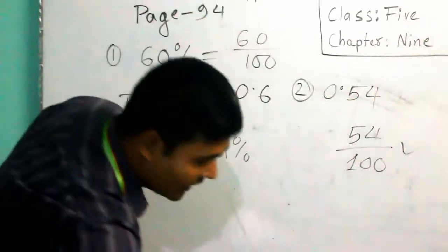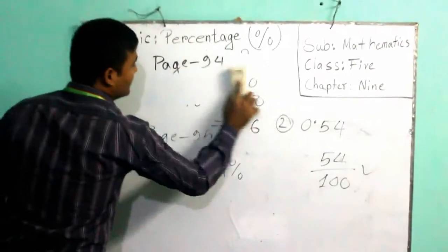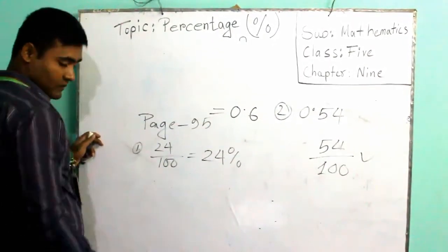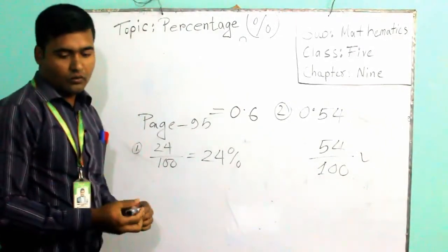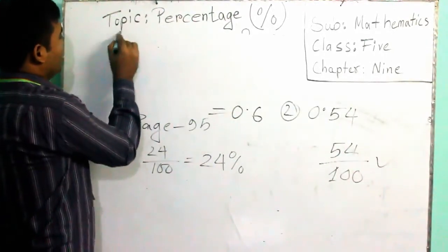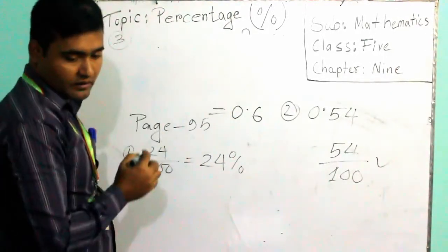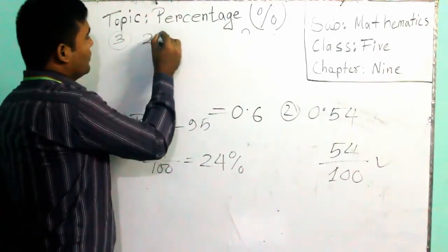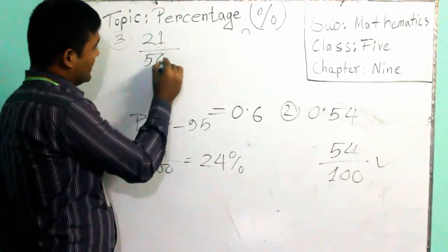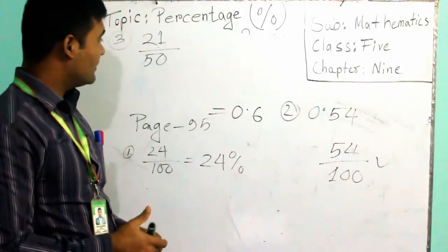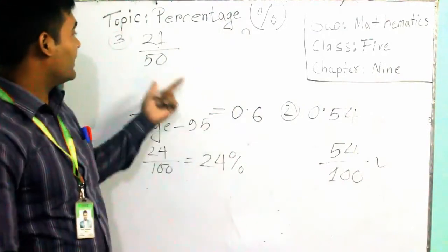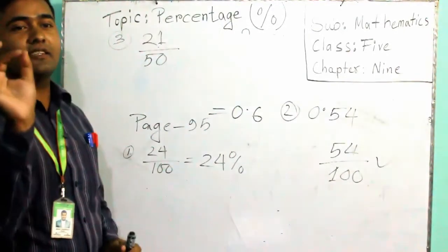If we go for another math, we will do something different. This will be number 3, 21 divided by 50. There is a question. As I said last time, this is 100, always 100 will come. But how we will do this one?